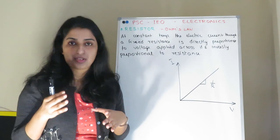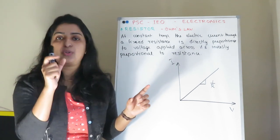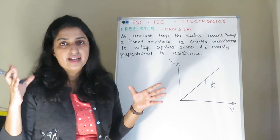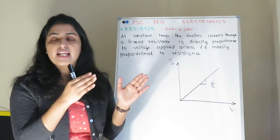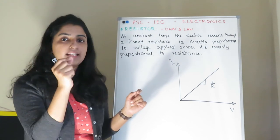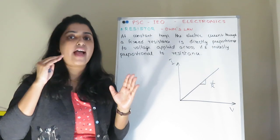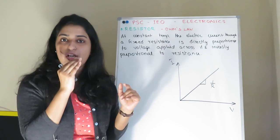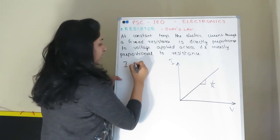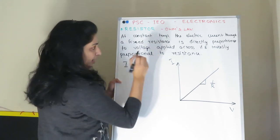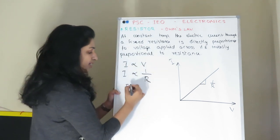We have a circuit with a voltage and a current. The current is directly proportional to the voltage. If we connect a device, the current can be excessive, so we introduce a resistor to limit the current. The current is directly proportional to the voltage across it and inversely proportional to the resistance.